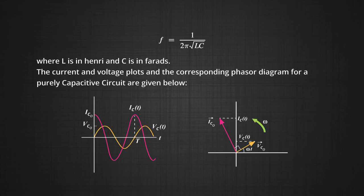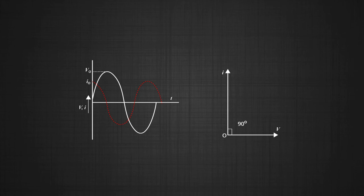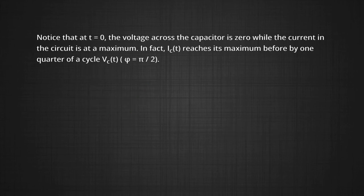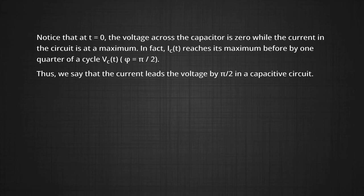The current and voltage plot and corresponding phasor diagram for a purely capacitive circuit is shown. We can see the variation of current and voltage over time, with a phase difference of minus π/2. When voltage starts from zero, current starts from π/2 or 90 degrees. At t equals zero the voltage across the capacitor is zero while the current in the circuit is at maximum. The current I_C reaches its maximum before V(t) by one quarter of the cycle — thus, current leads the voltage by π/2 in a capacitive circuit.